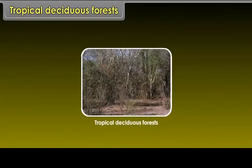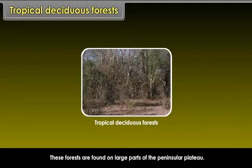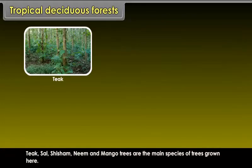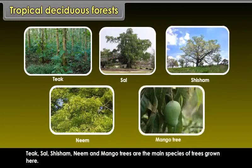Tropical deciduous forests are widely spread. Teak, sal, shisham, neem and mango trees are the main species of trees grown here.